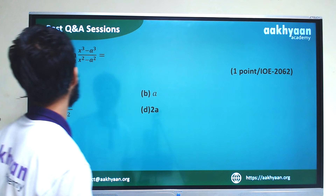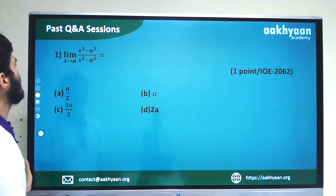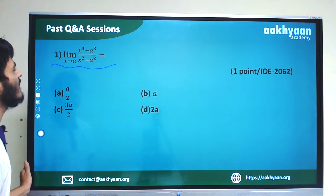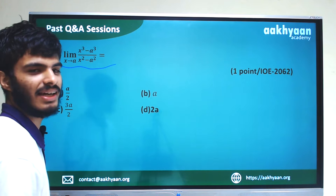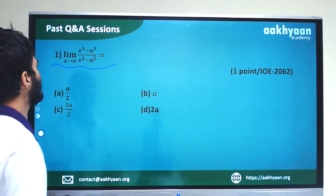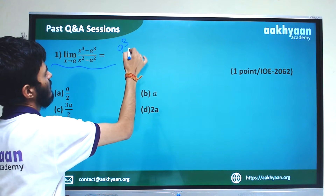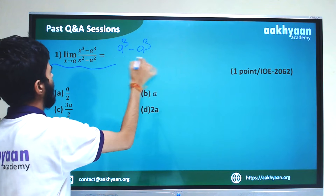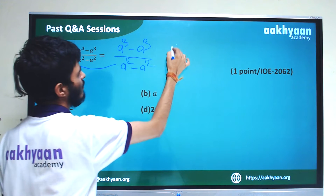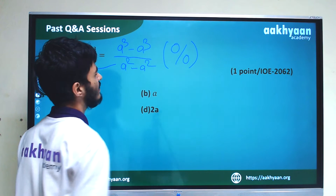The problem is quite easy. Limit x tends to a: x cube minus a cube by x square minus a square. Simply putting x equal to a gives a cube minus a cube by a square minus a square, which gives the 0 by 0 form.